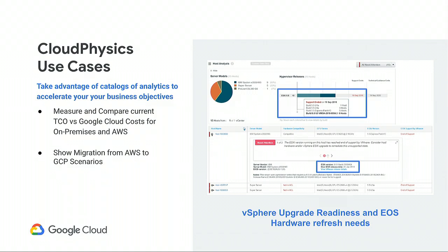For those with on-premise hardware, visibility into the hardware and resources is also going to be critical. As you start aging out old systems — running vSphere 6.0 or 5.5 — you'll want to migrate to vSphere 6.7, and there's an opportunity for hardware refresh. The question is: should I replace this hardware and bring it up to 6.7 and invest those resources, or is there cost avoidance by moving to the cloud?